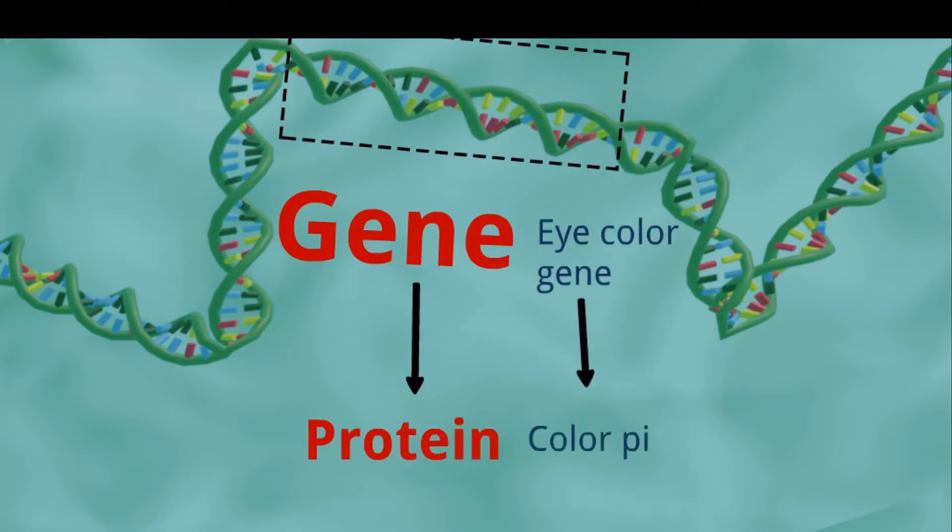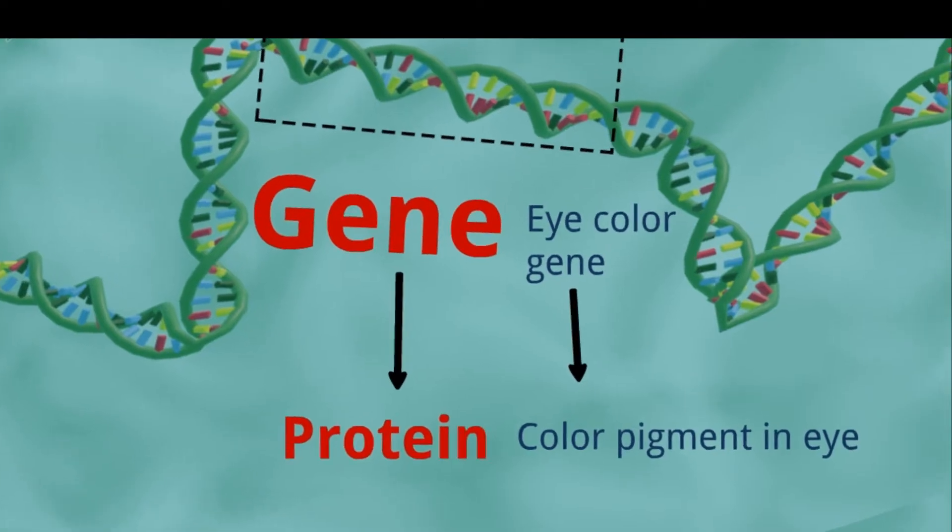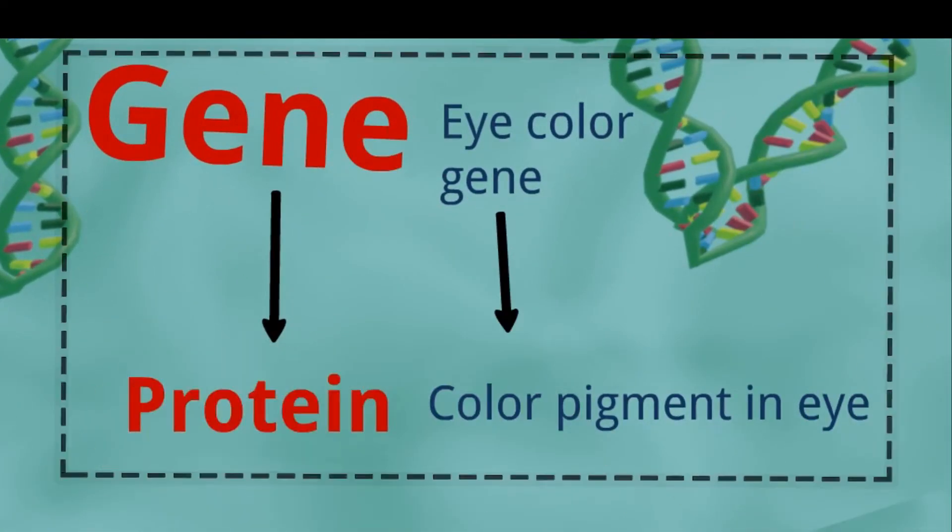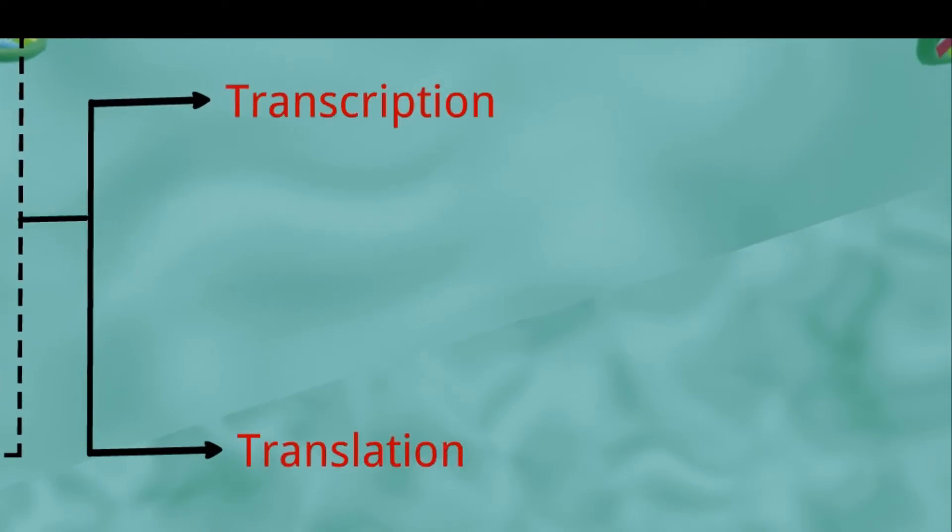The journey from gene to protein is complex. It consists of two major steps: transcription and translation. During the process of transcription, the information stored in a gene's DNA is passed to a similar molecule called messenger RNA.